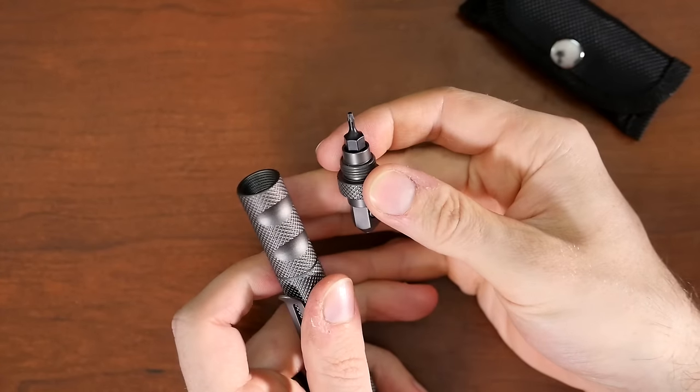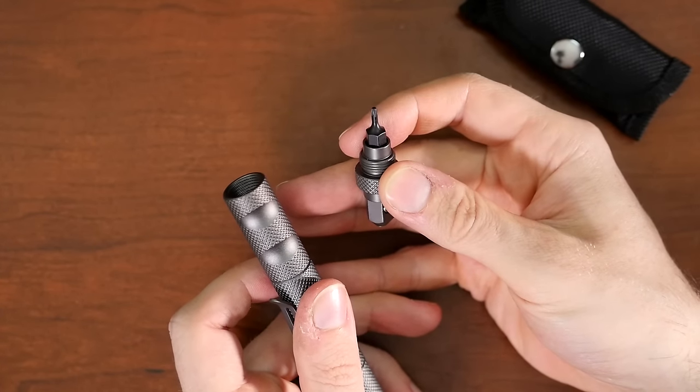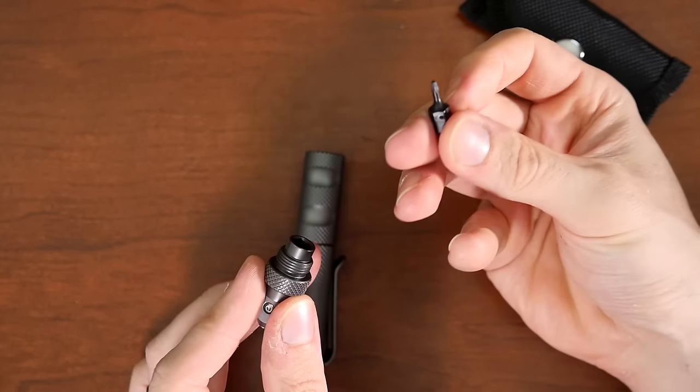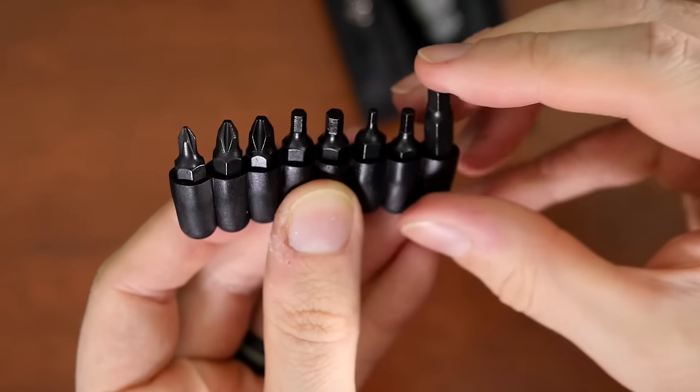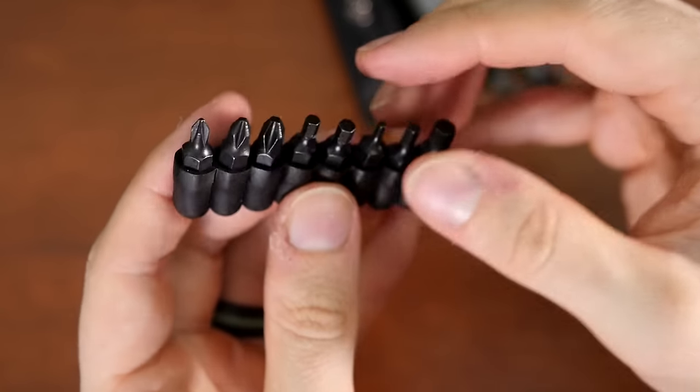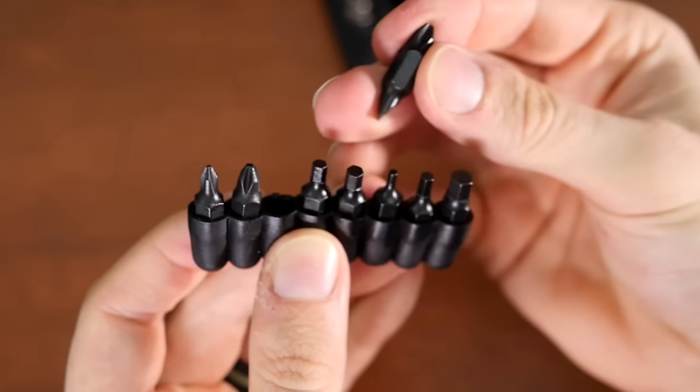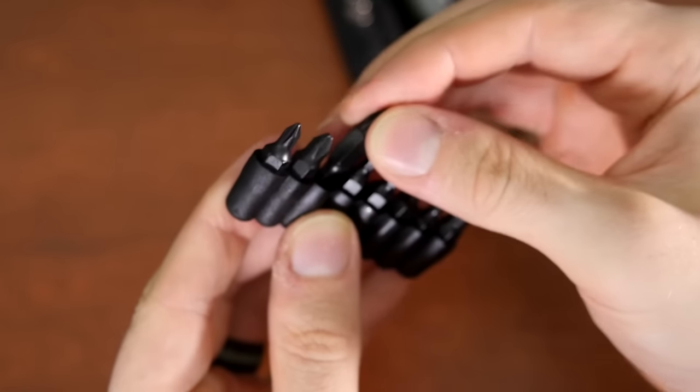Inside, you've got the bit holder with a double-sided bit. So here you've got various Allen keys. And Phillips screwdriver. Flathead on the other side. You might say it comes with a fair bit of accessories.